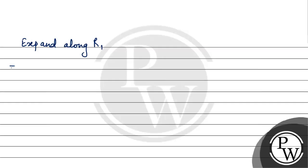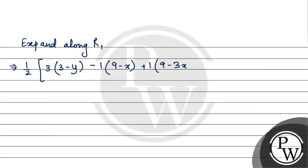R1 came. So, this implies half outside. Inside what remains: 3 multiplied by (3 minus y), minus 1, (9 minus x), plus 1 multiplied by (9y minus 3x) is equal to 0.